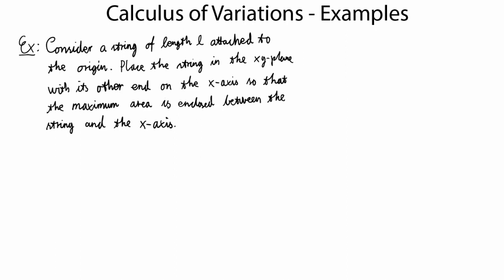Before moving on to calculus of variations in high-dimensional spaces, we're going to solve one more problem using the one-dimensional Euler-Lagrange equation. Consider a string of length L attached to the origin, then place the string in the xy-plane with its other end on the x-axis so that the maximum area is enclosed between the string and the x-axis.